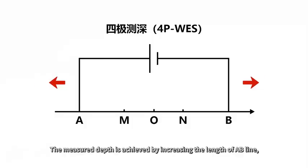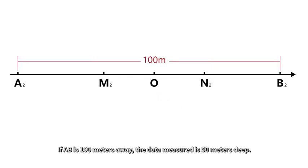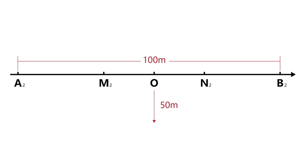The measurement depth is achieved by increasing the length of the A, B line. For example, if A, B is 40 meters away, the data measured is 20 meters deep. If A, B is 100 meters away, the data measured is 50 meters deep.